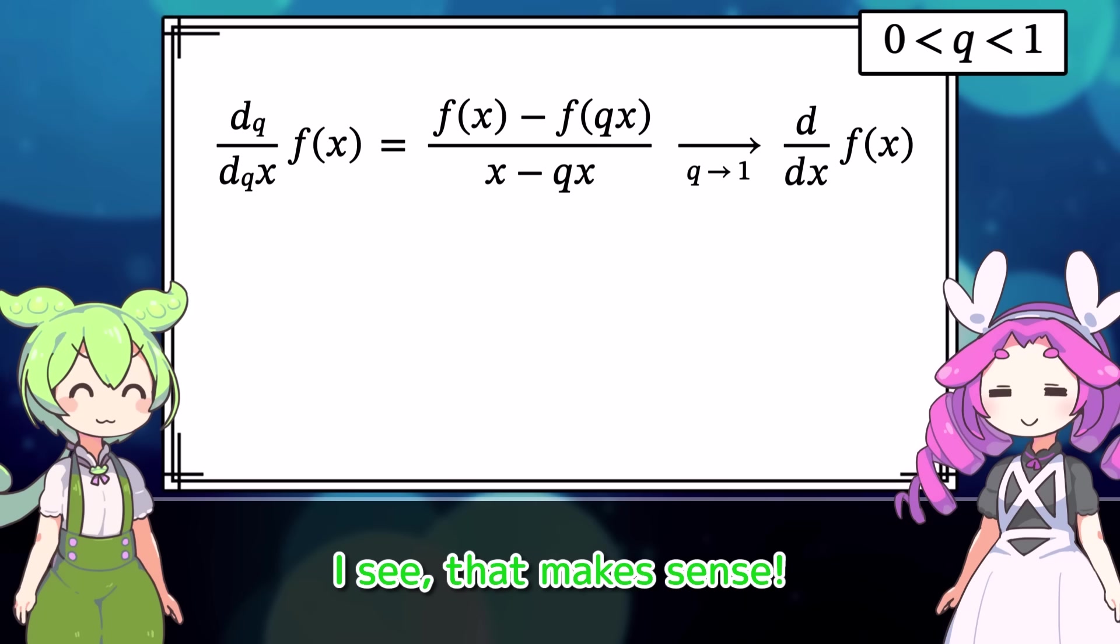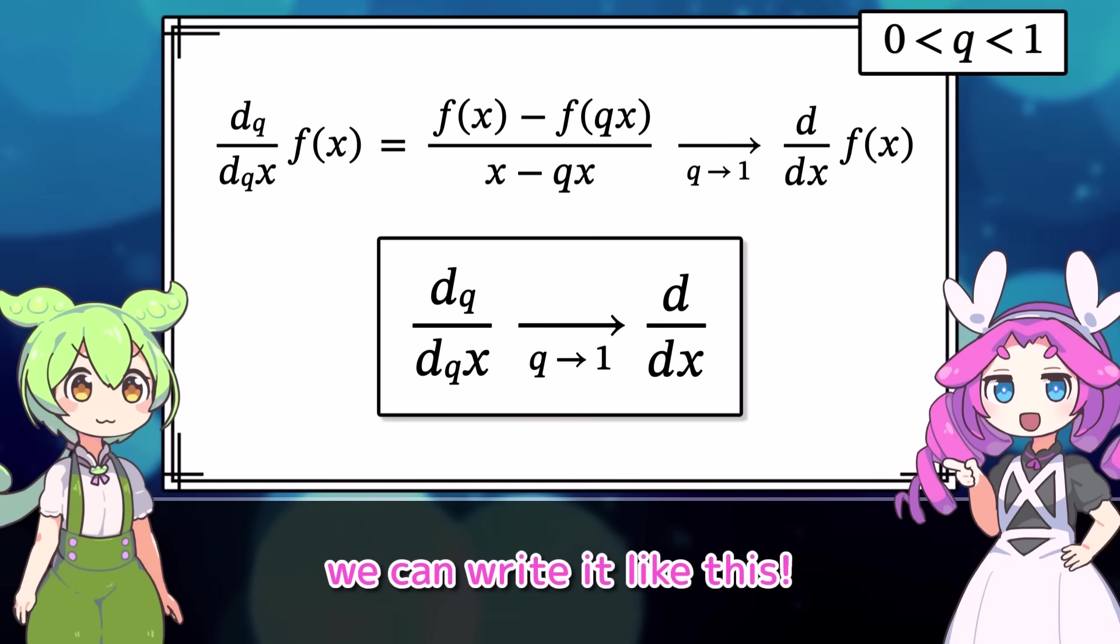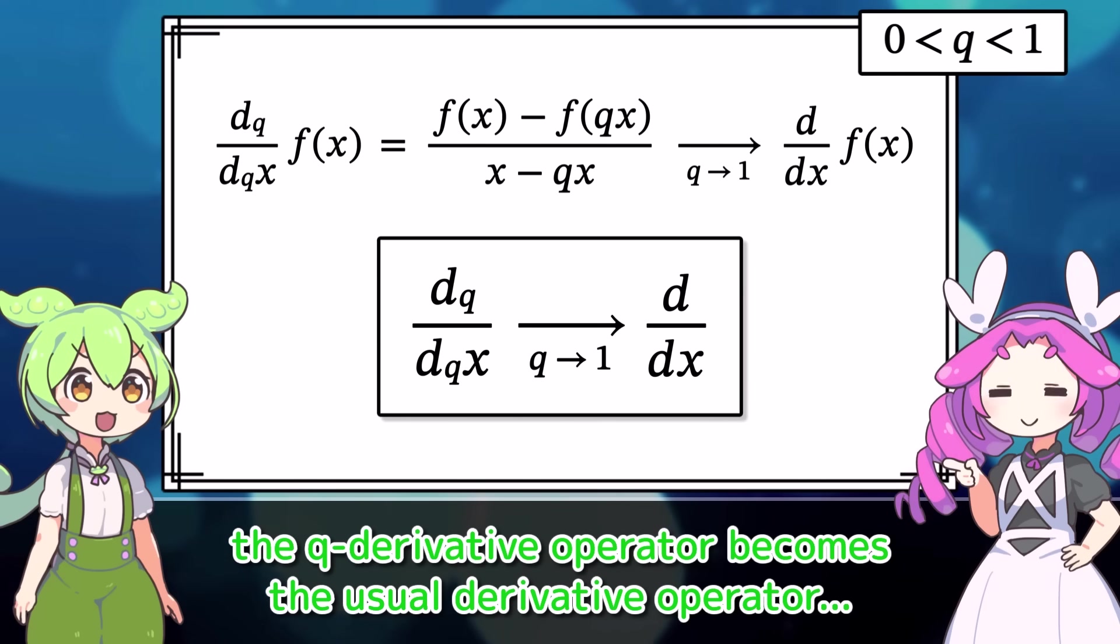And when q approaches 1, this becomes the usual derivative. Of course, that is assuming the function is differentiable in the usual sense. I see, that makes sense. In short, we can write it like this. When q approaches 1, the q-derivative operator becomes the usual derivative operator.